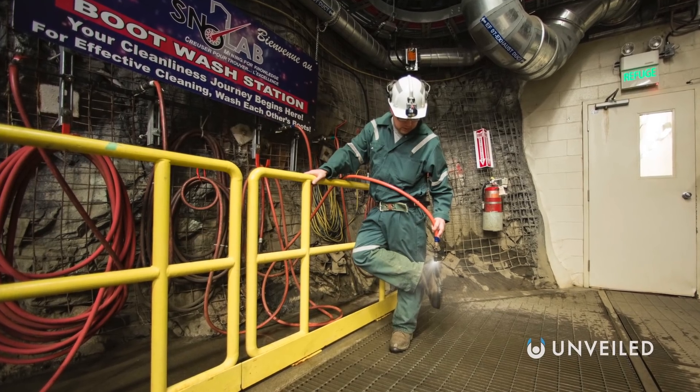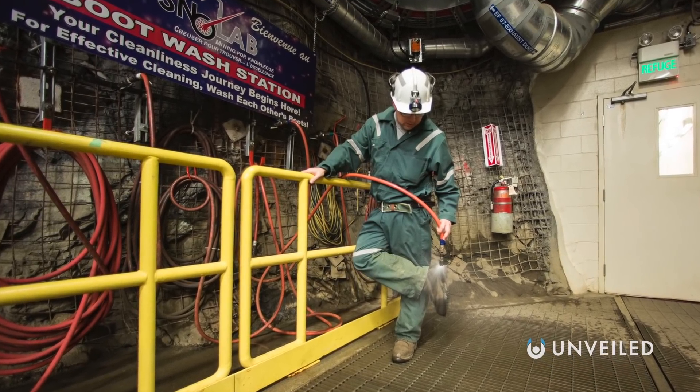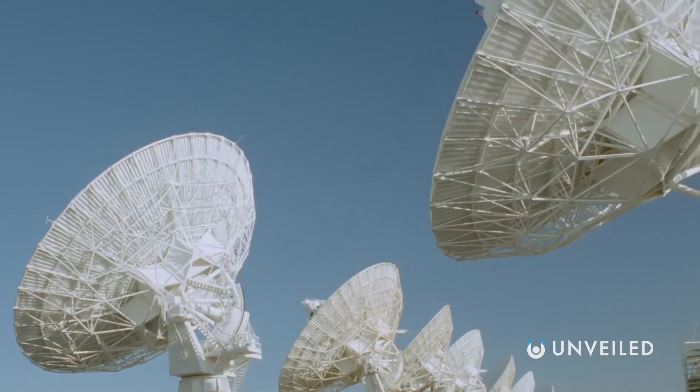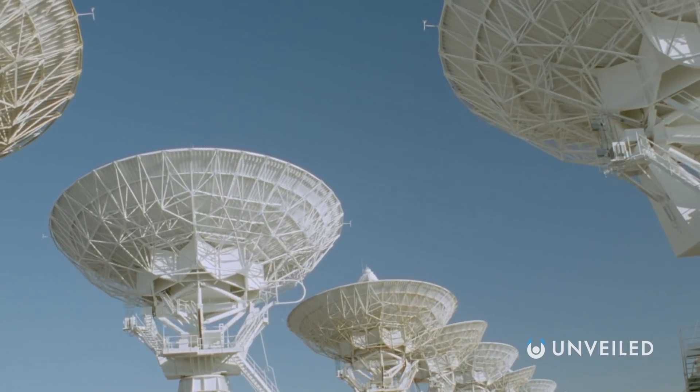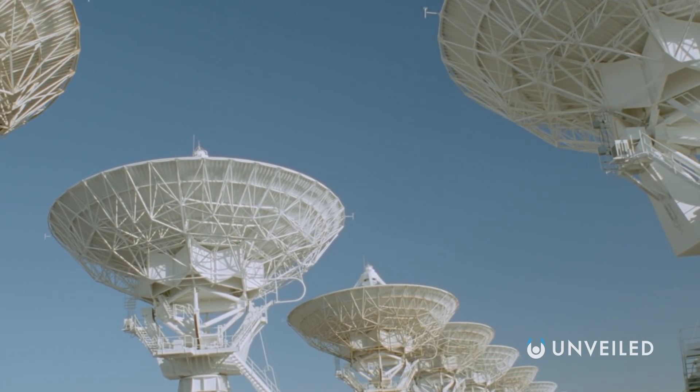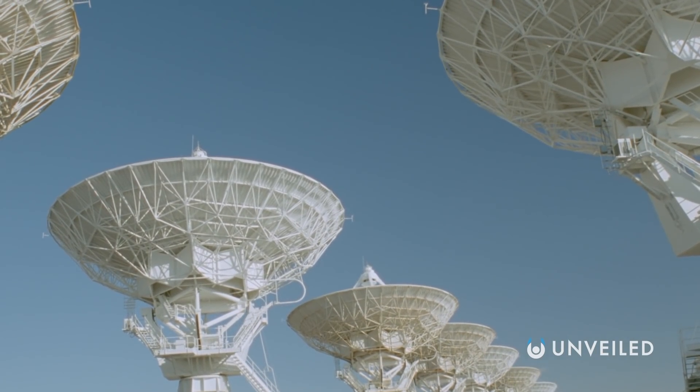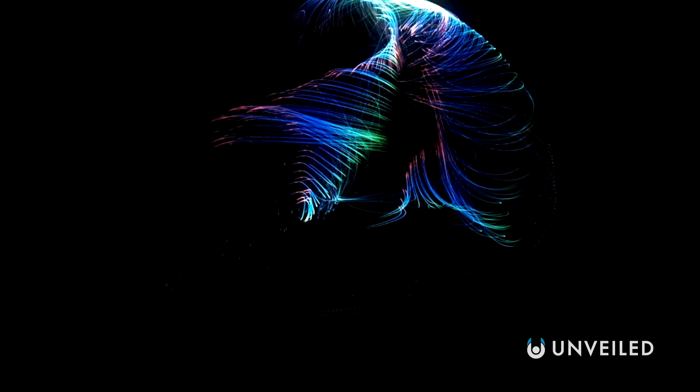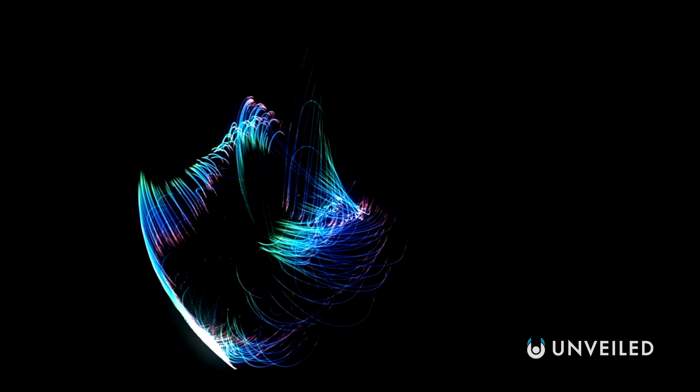SNOLAB is an operation deep inside a nickel mine in Ontario, Canada, which has a handful of dark matter detectors within. One detector, known as DAMIC, is trying to take images of various particles to hopefully one day find a new one that could be deemed the first dark matter particle. In the same facility, Deep 3600 is trying to detect dark matter particles as they pass through argon.